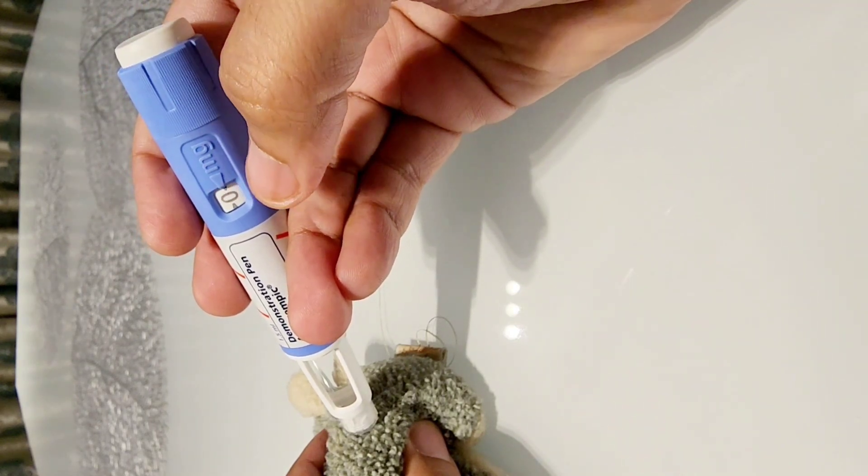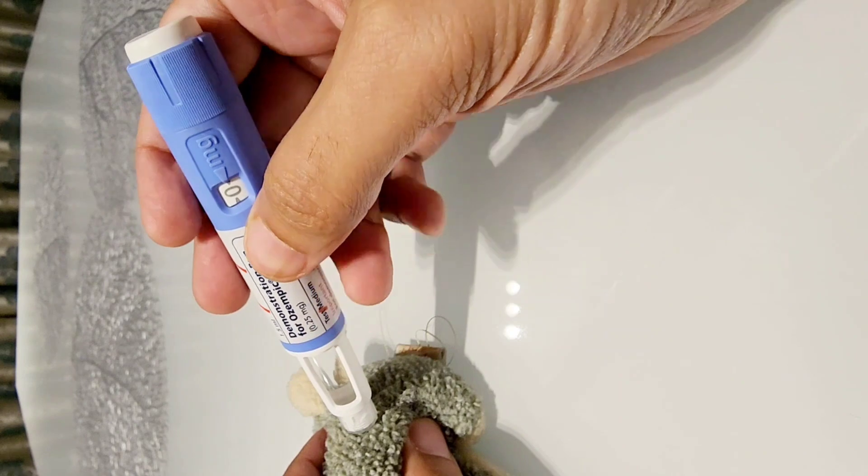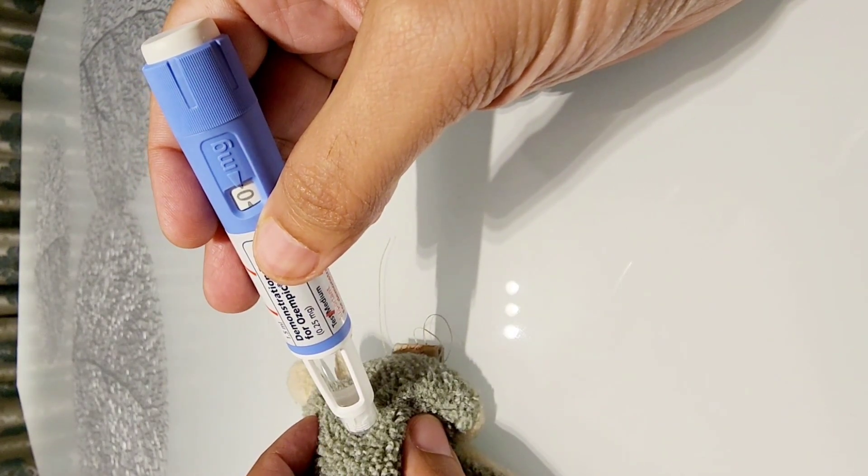And when you are injecting at the back you have to see that the whole dial goes back to zero. When it has gone back to zero the medication has already been administered. Now you have to count till 10.